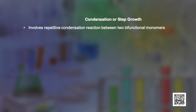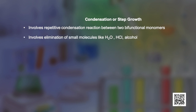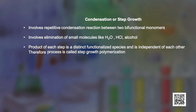Condensation or step growth polymerization generally involves a repetitive condensation reaction between two bifunctional monomers. These polymerization reactions may result in the loss of some simple molecules such as water or alcohol, and lead to the formation of high molecular mass condensation polymers. In these reactions, the product of each step is again a bifunctional species and the sequence of condensation goes on. Since each step produces a distinct functionalized species and is independent of each other, the process is also called step growth polymerization.